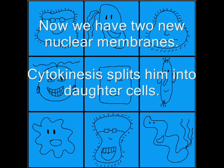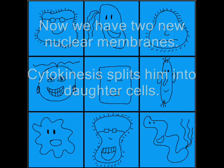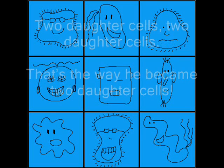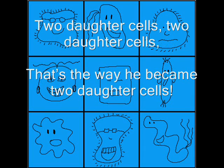Now we have two new nuclear membranes. Cytokinesis splits him into two daughter cells. That's the way he became two daughter cells.